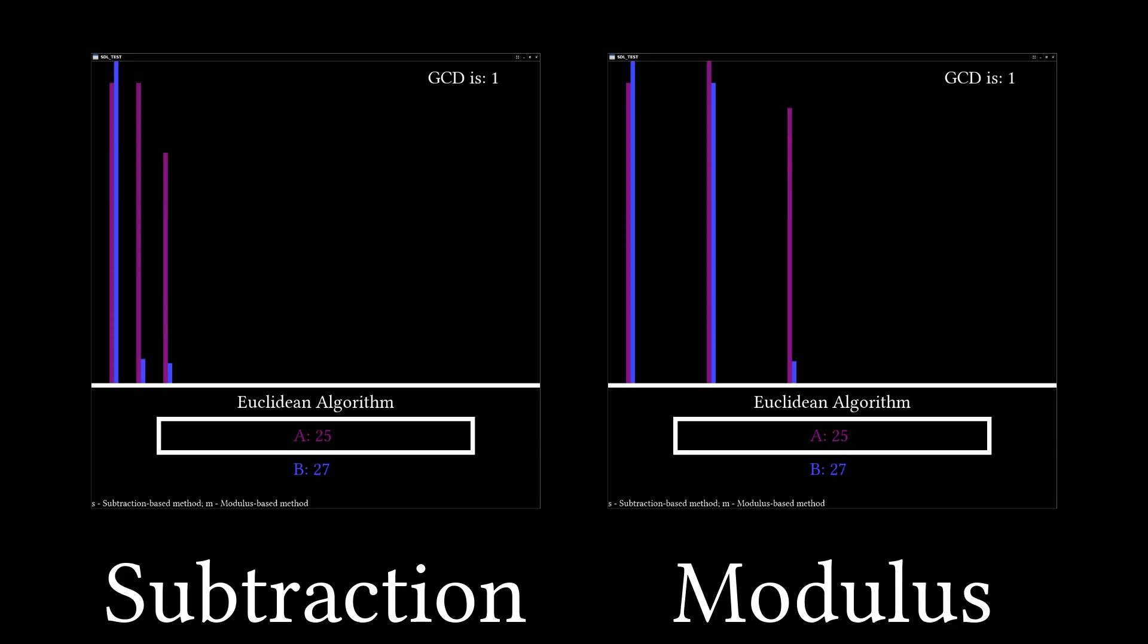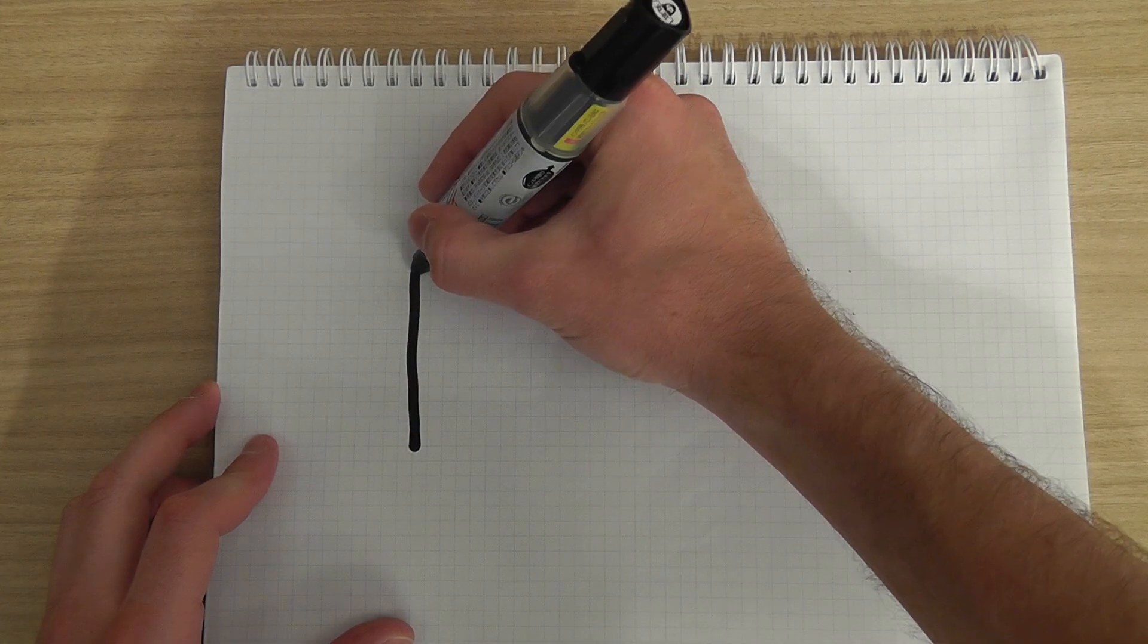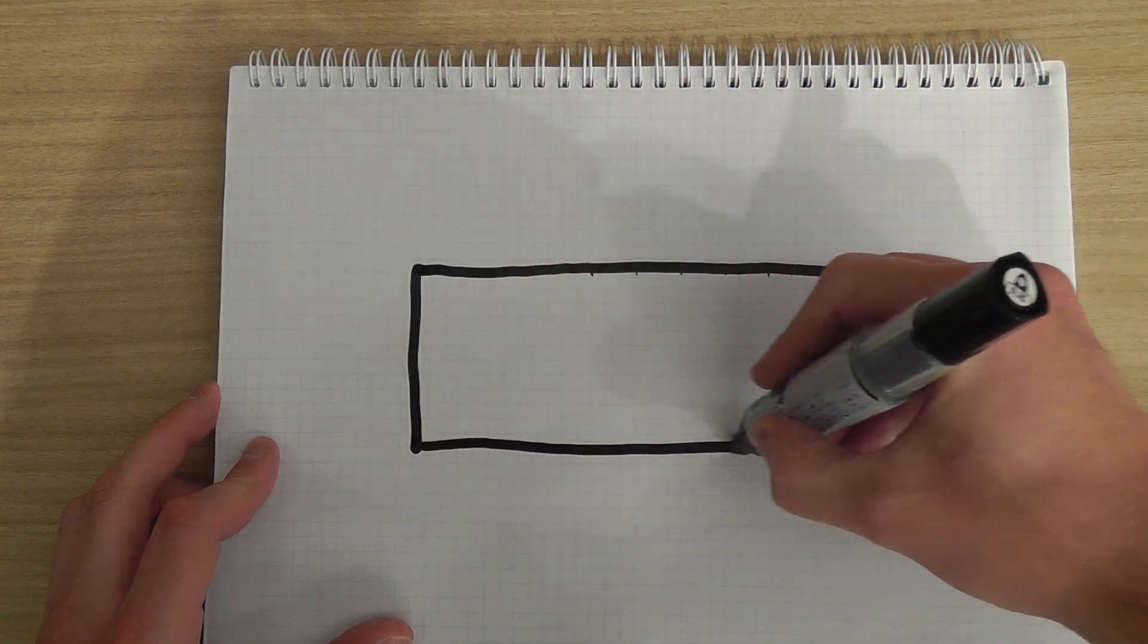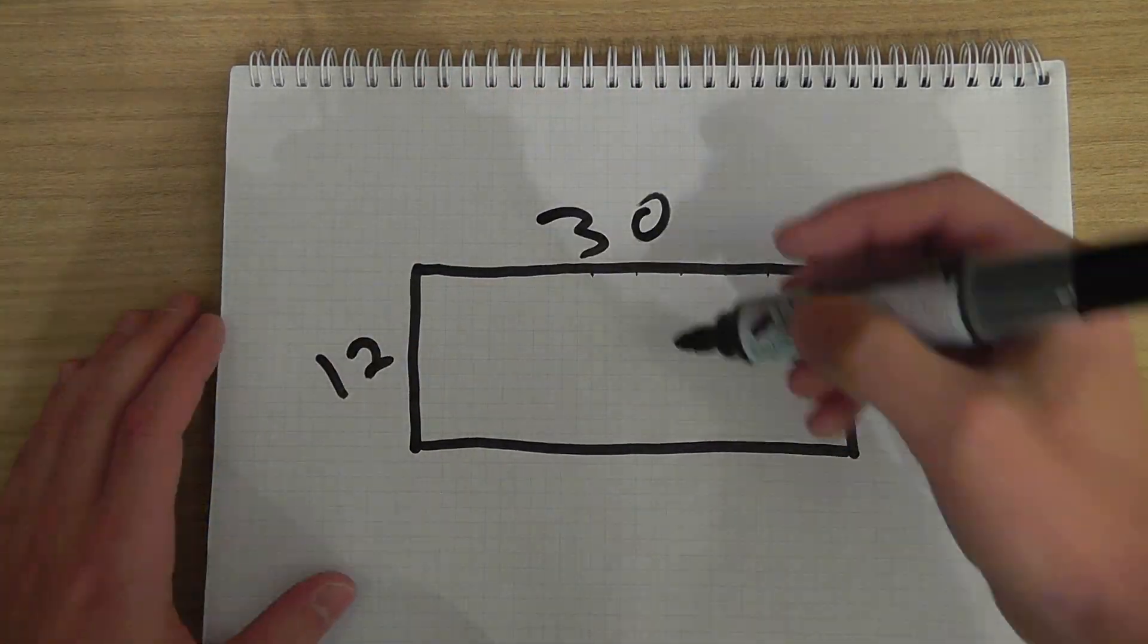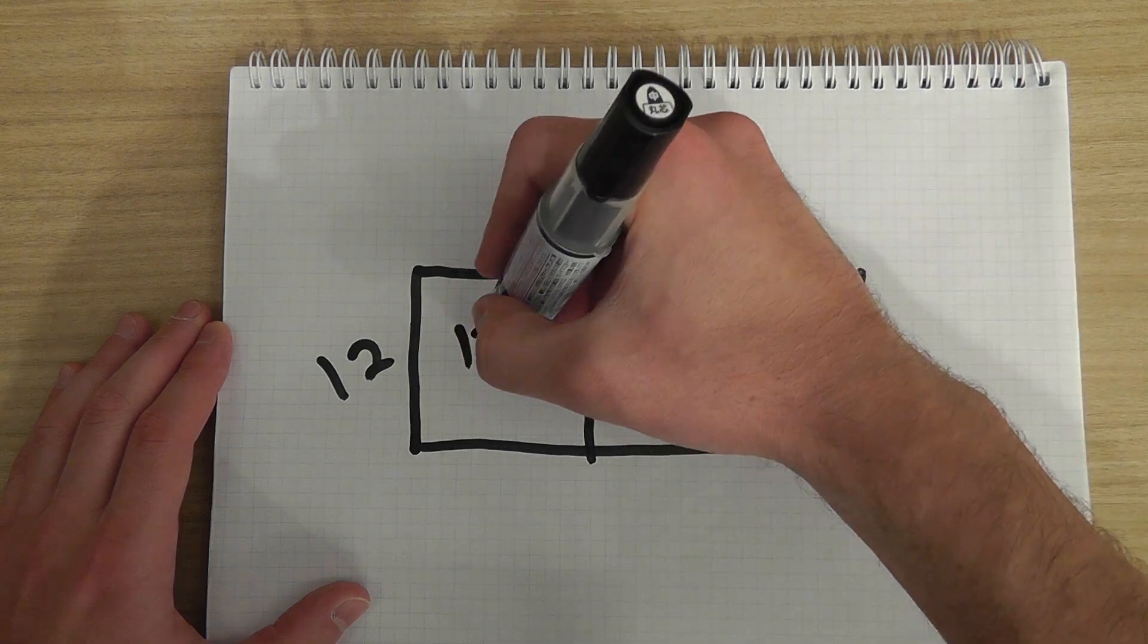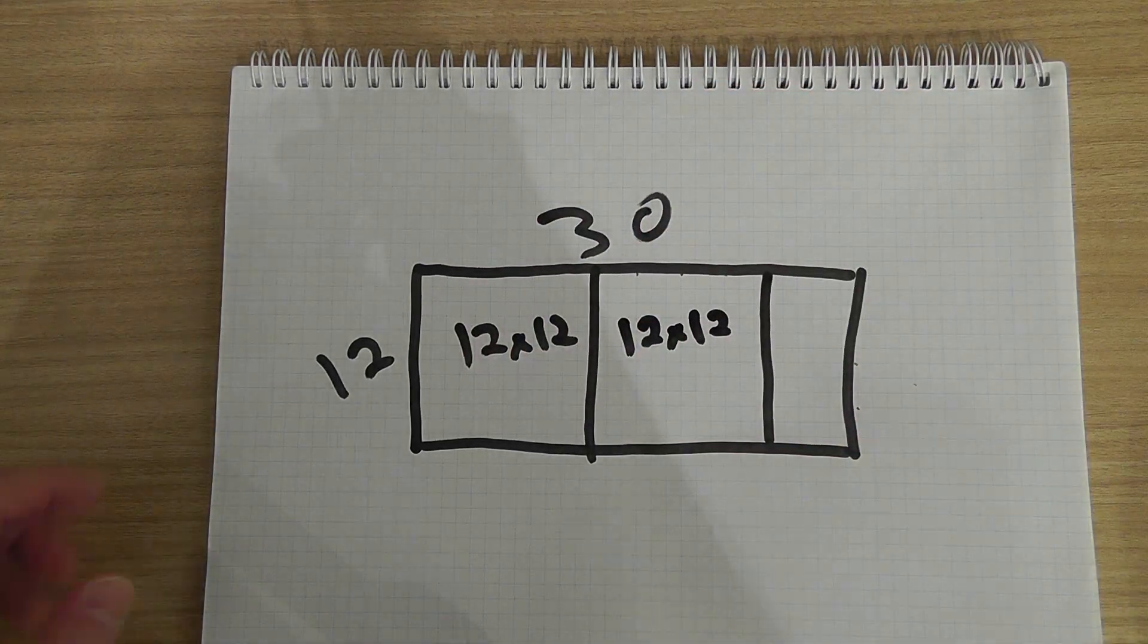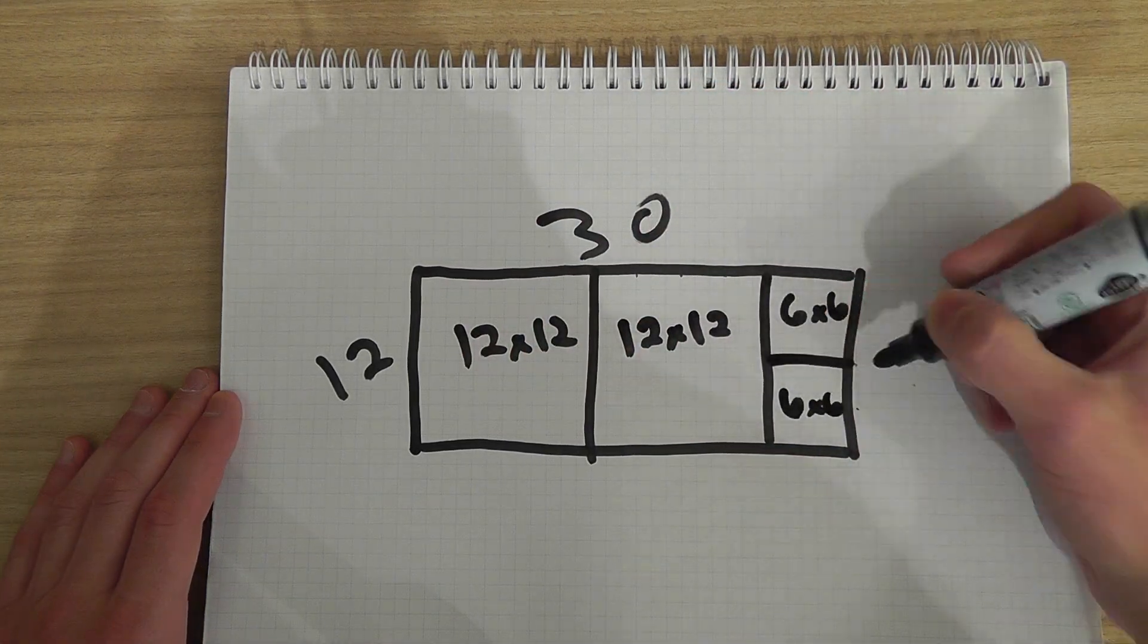In most cases, the modulus-based method will complete in fewer steps than the subtraction-based one. So keep that in mind whenever using the Euclidean algorithm. Now, there's another way to visualize this method. If we start with a rectangle of size AB and divide this rectangle into as few squares as possible, the length of the smallest square will be the greatest common divisor.